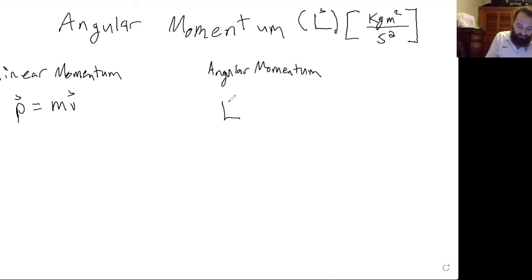For angular momentum, we can write the same thing, where the angular equivalent of mass is moment of inertia, and the angular velocity is omega.